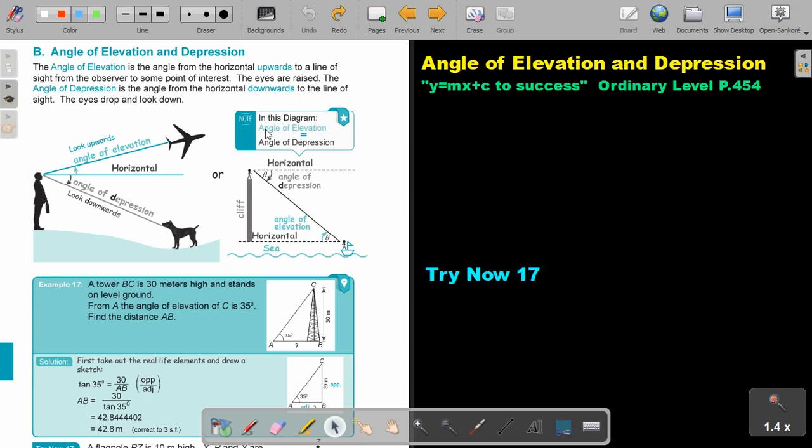In this diagram, the angle of elevation is equal to the angle of depression. If I make a horizontal line there and there, then this will be alternate angles. Therefore, this angle of elevation will be equal to this angle of depression in this sketch.